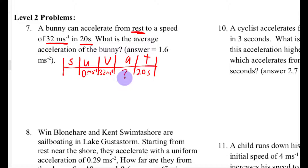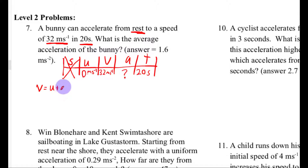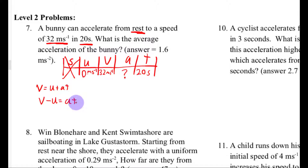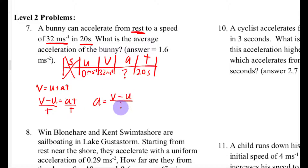We're trying to find the acceleration, so we need an equation that has u, v, a, and t — and not s. The only one that has that is v equals u plus at. I'm going to solve this for a by rearranging: subtract u from both sides and divide both sides by t, giving a equals v minus u over t.